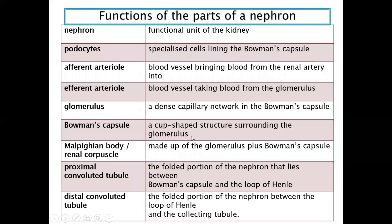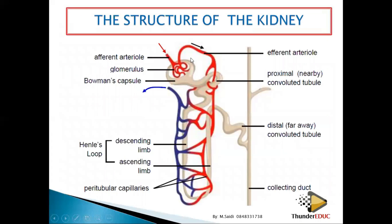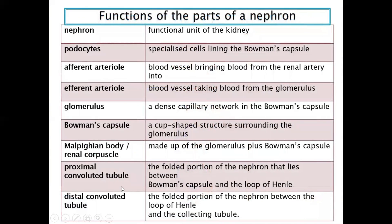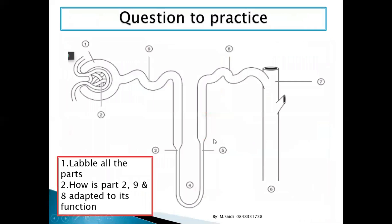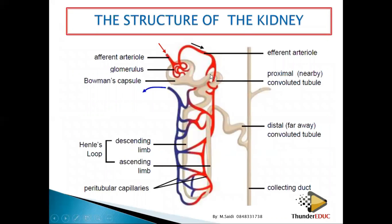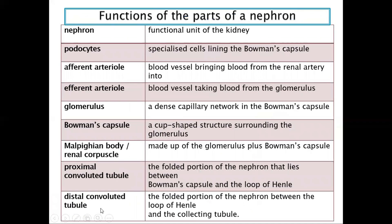The Malpighian body is made up of the glomerulus plus the Bowman's capsule. When you combine the Bowman's capsule and the glomerulus, they form the Malpighian body. The proximal convoluted tubule is the folded portion of the nephron that lies between the Bowman's capsule and the loop of Henle.